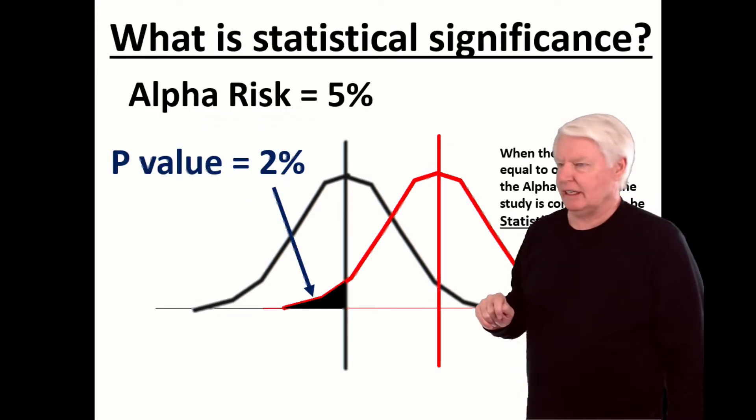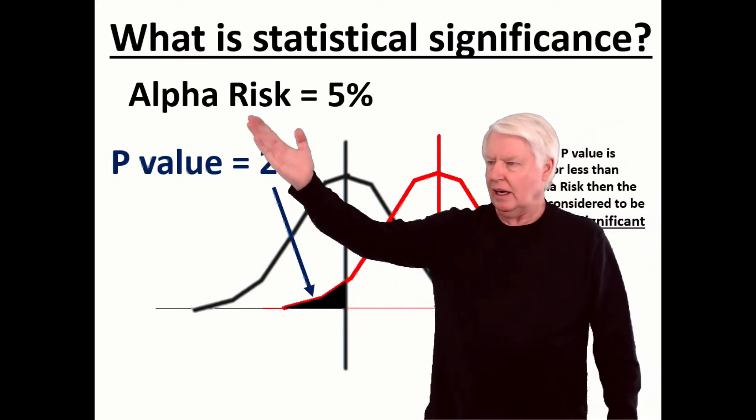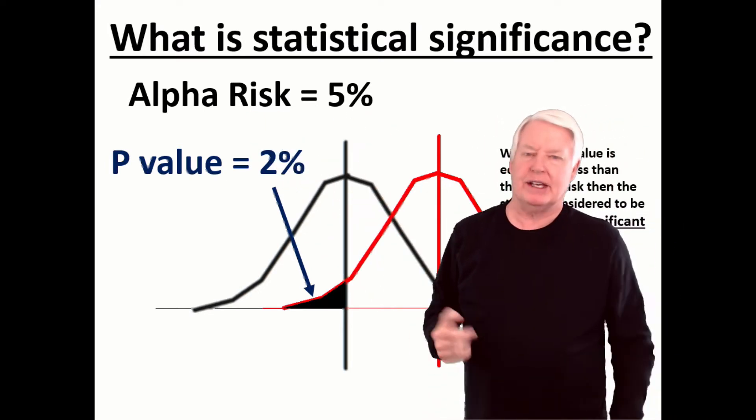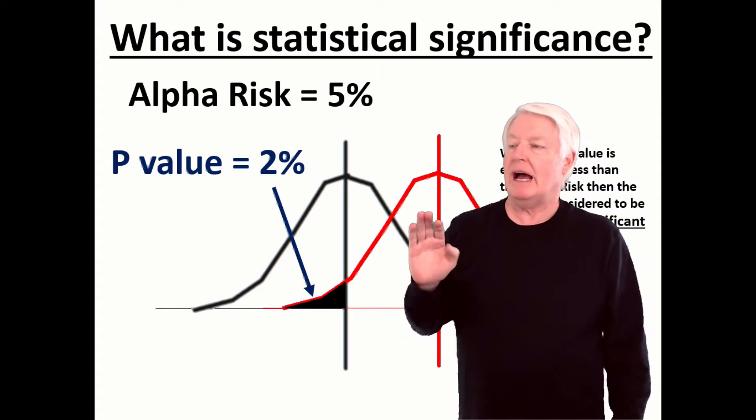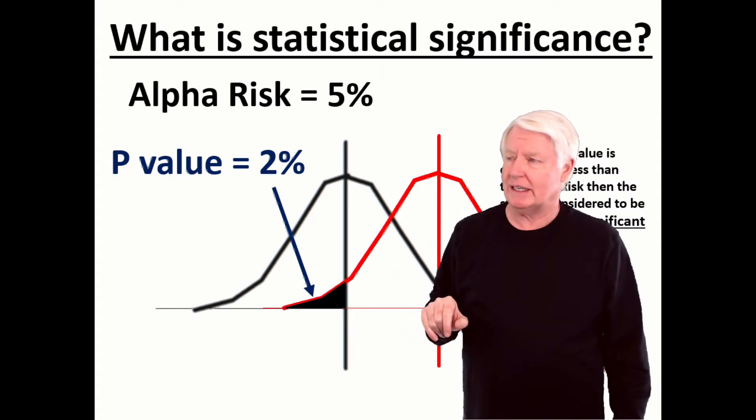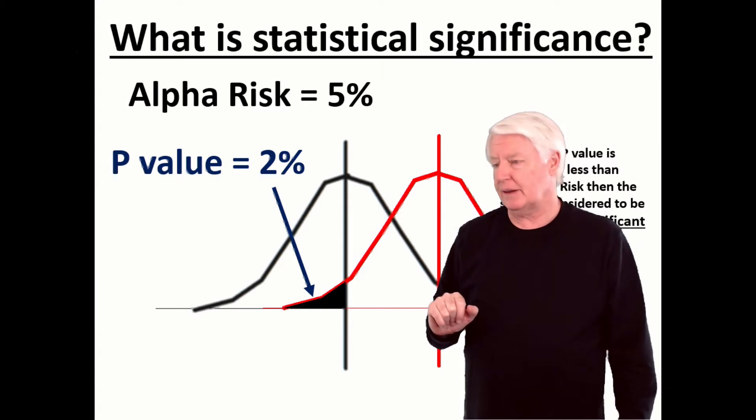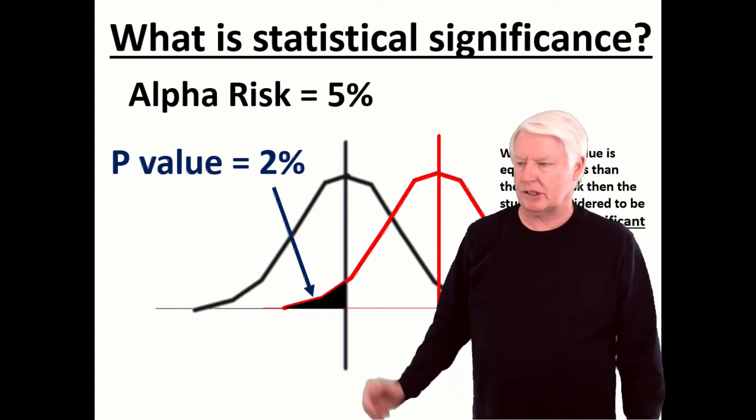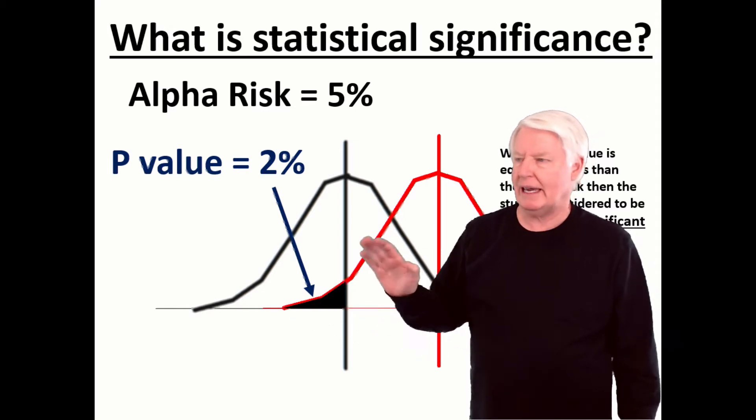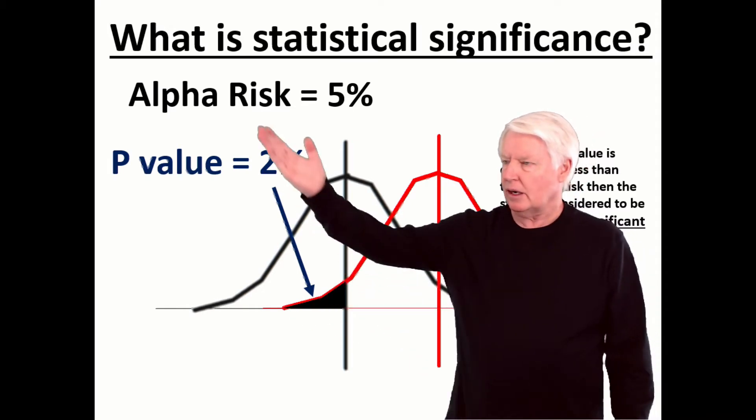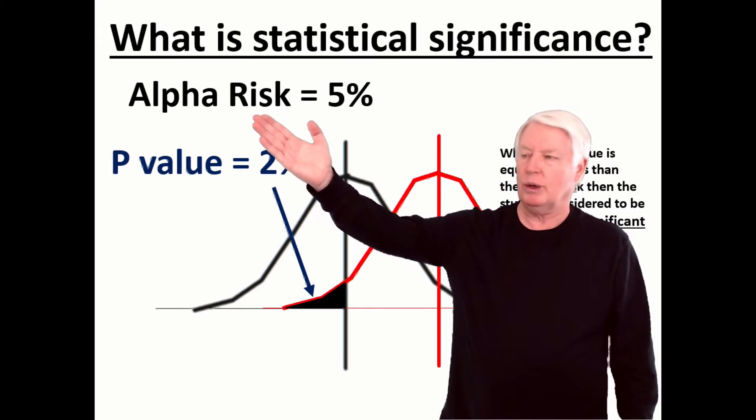What is statistical significance? We've covered this also. Alpha risk equals 5%. Remember, alpha risk is the risk I'm willing to take. You have to be willing to take a risk when you do these types of inference studies or hypothesis tests, because these are continuous distributions, which means there will always be some overlap. So you can't take zero risk.